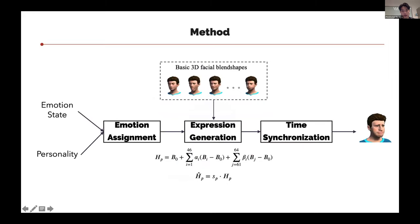In the expression generation part, we generate emotional facial expressions using a set of basic 3D facial blend shapes. The first equation is a weighted combination of available blend shapes, and the second equation multiplies the peak expression by the intensity factor derived from personality. Then in the time synchronization part, we create an animation based on the peak expression, producing a time-synchronized animation from the still expression.